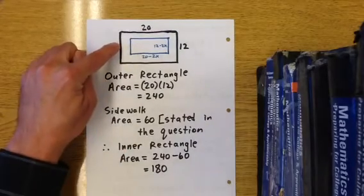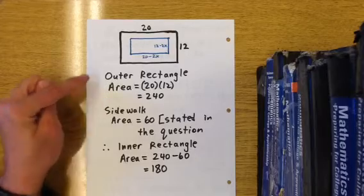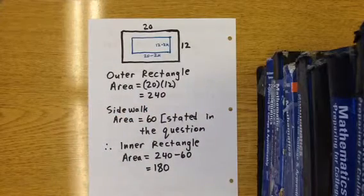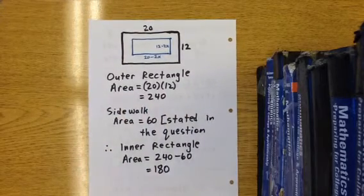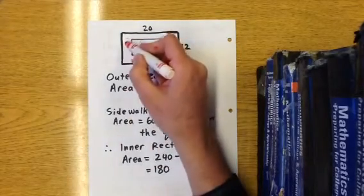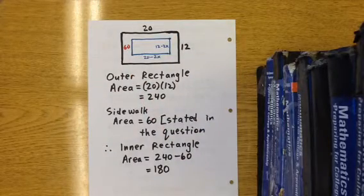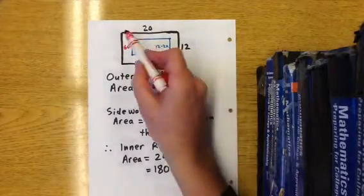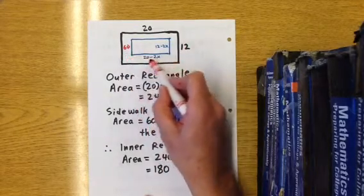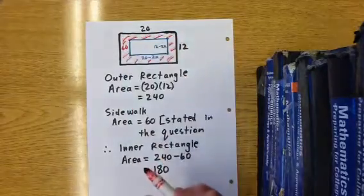So this is our diagram. I just shrunk it down a little bit. We see that for the outer rectangle, the area 20 times 12 is 240. We know that the sidewalk is going to be 60, that was stated in the question. So the sidewalk has an area of 60. We know that the outer rectangle is 240 and the sidewalk itself is 60, so this shaded in red frame is 60.